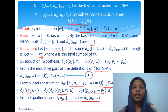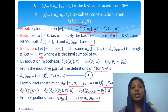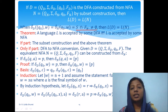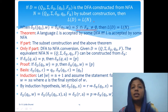We must also show that this set of states contains a final state from FN if and only if string W is in the language. If the set of states reached has a final state, then both DFA and NFA have ended in an accepting state, establishing that L(D) = L(N). Otherwise, both end in a non-accepting state.